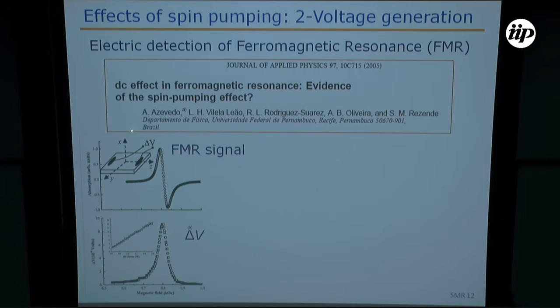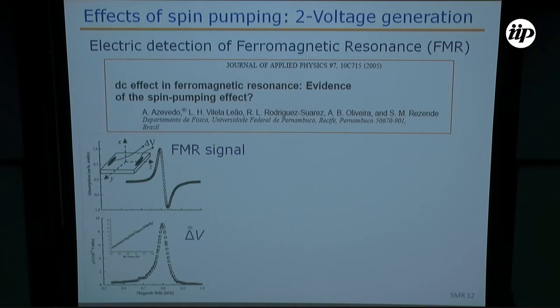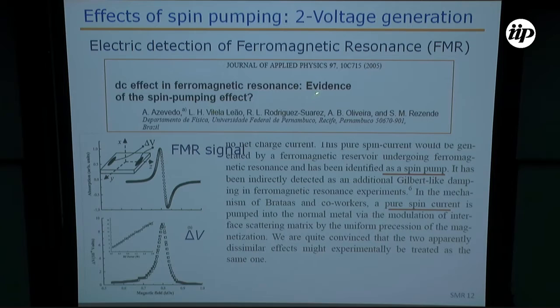A couple of years later, my colleague Antonio Azevedo had the idea of taking a ferromagnetic material — actually a tri-layer — and putting contacts to measure the voltage. This is the FMR signal, the Lorentzian derivative, and at the same field they observed a voltage. The voltage increases with the microwave power. They made experiments with different materials. We were not sure how the spin current was being converted into charge current, so there was a question mark in the title.